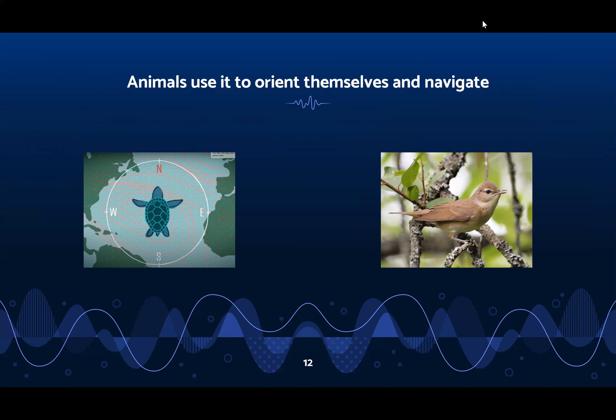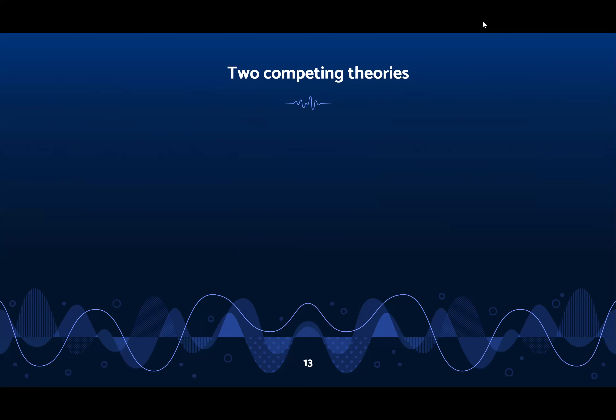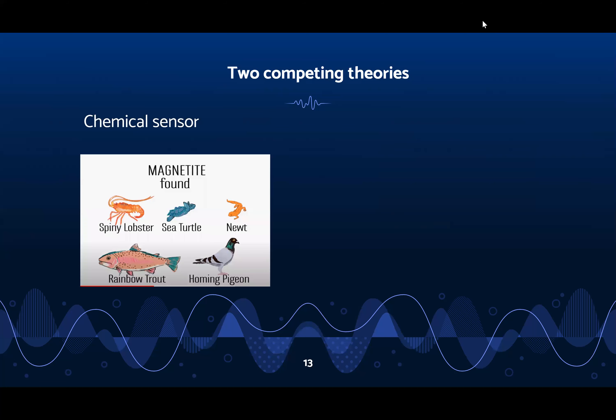The ability to sense magnetic fields is so important, but we don't really know how it works. There are two competing theories of how it works in animals. The first theory is the chemical sensor theory, which claims there are magnetite chemicals in the body that act as magnetic receptors and are thought to be able to pick up magnetic field strength. The animals on the left are some examples of animals who use a chemical sensor.